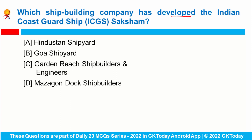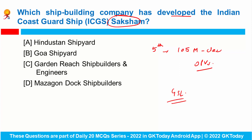Which shipbuilding company has developed the Indian Coast Guard ship Saksham? The Indian Coast Guard has commissioned Saksham, the fifth Coast Guard ship in the series of 105-meter class offshore patrol vessels. Saksham is the fifth and last offshore patrol vessel designed and developed by Goa Shipyard Limited for the Coast Guard. It uses totally indigenous steering gear and gearbox, which were earlier being imported. Goa Shipyard Limited is the first DPSU shipyard to formulate and adopt a Make in India policy.